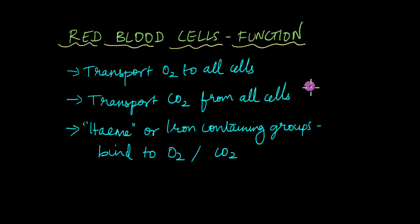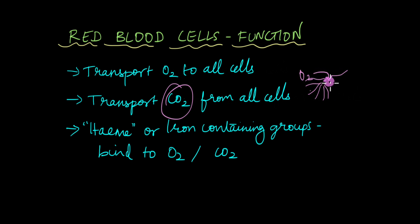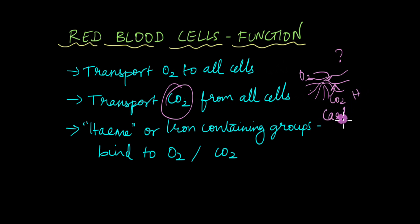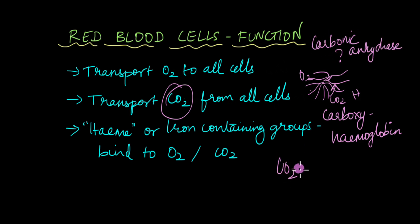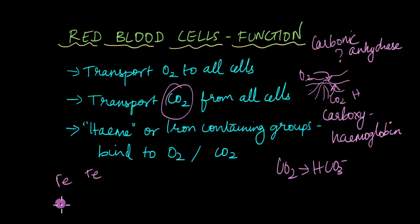The main function of RBCs is to transport oxygen to all cells. RBCs are also involved in transporting carbon dioxide from the cells. At the blood capillaries where exchange is taking place, oxygen is transported to the cell on one end, and carbon dioxide is picked up by the blood and transported to the lungs. Carbon dioxide can bind with hemoglobin to form carboxyhemoglobin. Red blood cells also have an enzyme known as carbonic anhydrase, which converts CO2 to bicarbonate ions that are then dissolved in plasma and transported to the lungs.